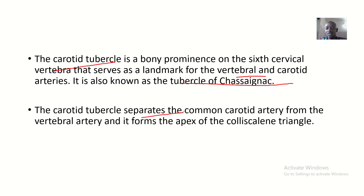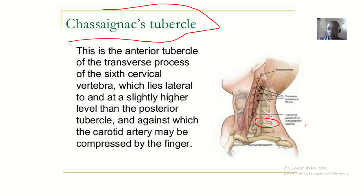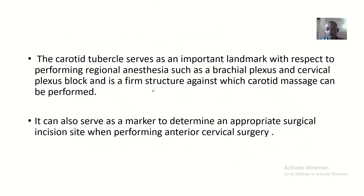The carotid tubercle separates the common carotid artery from the vertebral artery, and it forms the apex of the prescalene triangle. The Chassignac tubercle is the anterior tubercle of the transverse process of the sixth cervical vertebra, which lies lateral to and at a slightly higher level than the posterior tubercle.